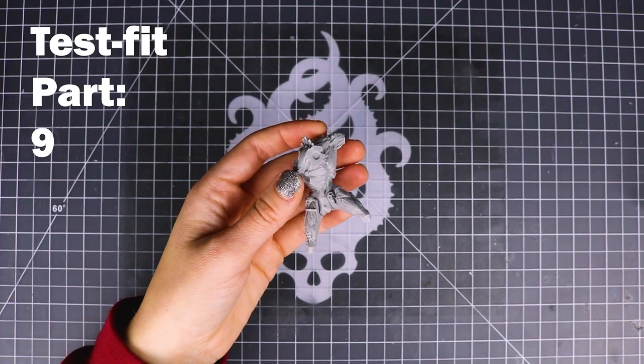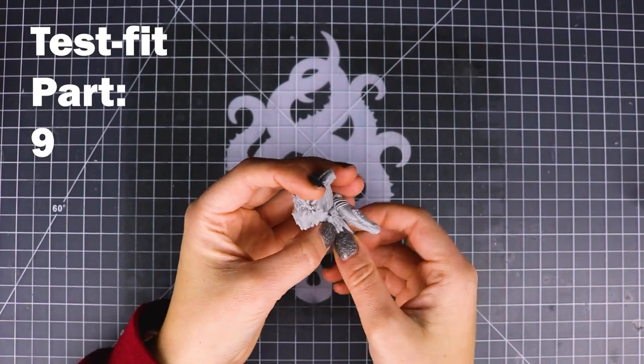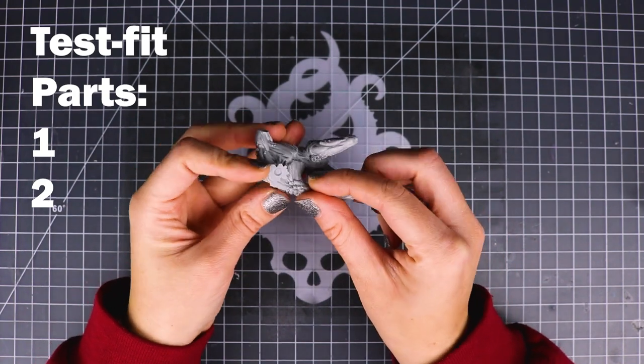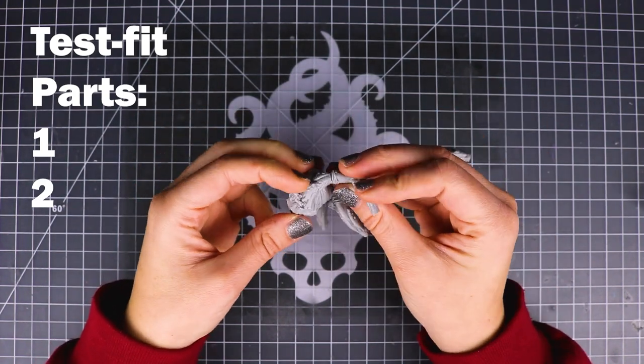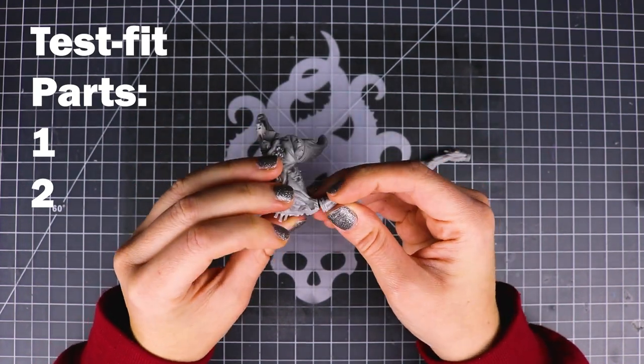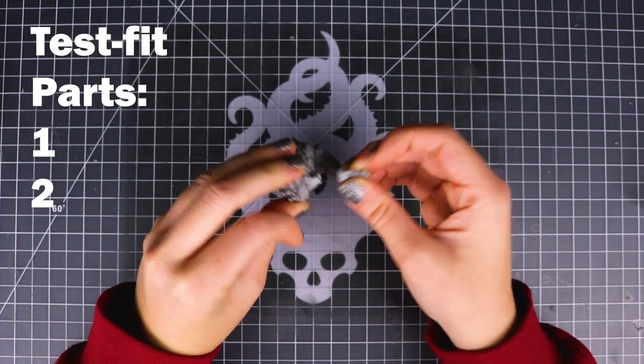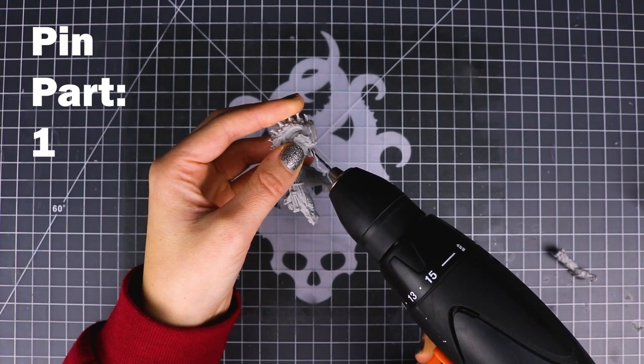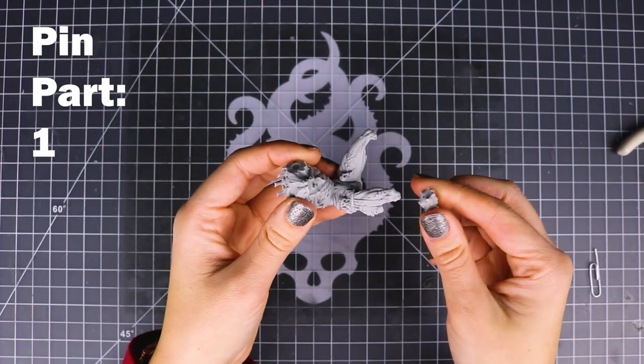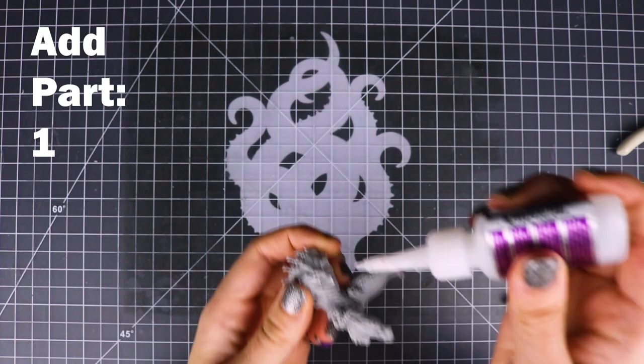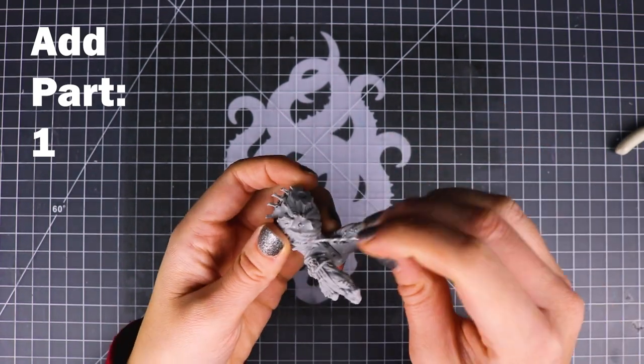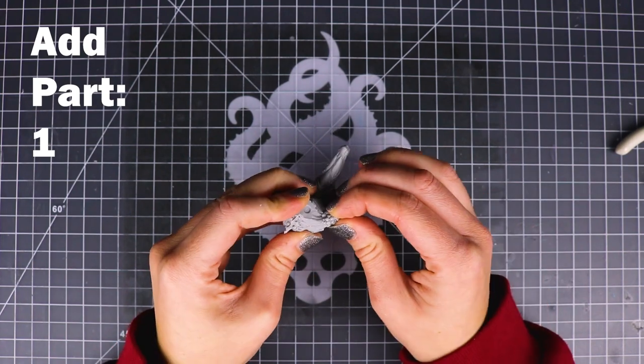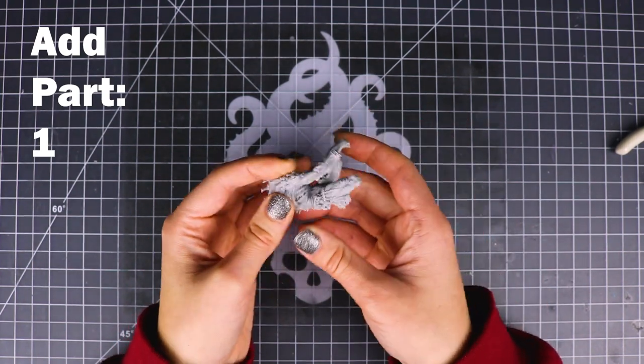So now that those legs have dried a bit more I'm going to test the loincloth. Make sure that fits. And then make sure that all of these other parts are fitting nicely. Make sure they're all cleaned up. These will be attached soon. And I'm going to be pinning the right arm again for stability here. Out of all of the models I've assembled so far this one definitely has the most parts that are connecting to multiple other parts. When you attach the scythe weapon it just puts pressure on both his arms so it's good to pin it.